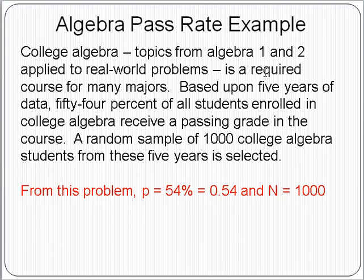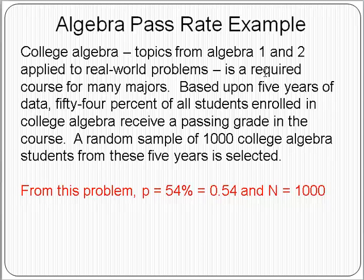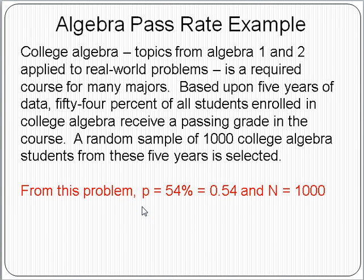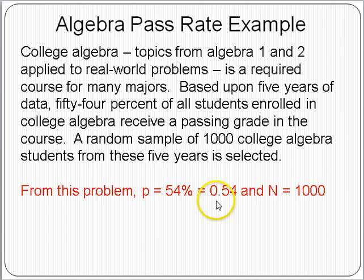Now let's focus on an application of this information. College Algebra, which includes topics from Algebra 1 and 2, is required of many majors on campus. Based upon five years of data, 54% of all students enrolled in College Algebra receive a passing grade. A random sample of 1,000 students from these five years is selected. So p, the proportion of successes in the population, is 0.54, and n is 1,000.